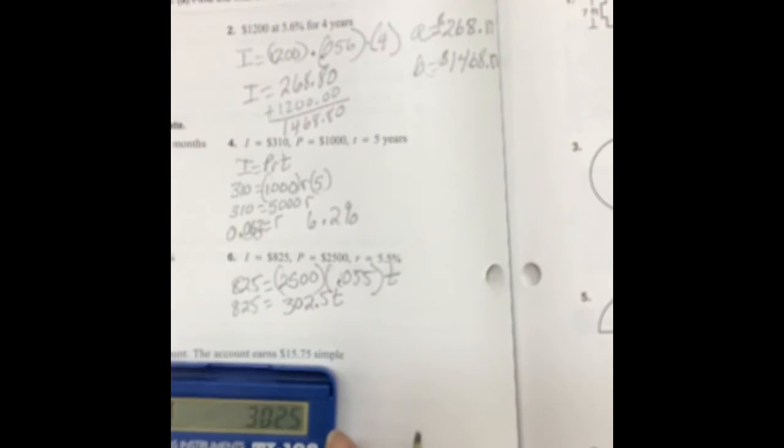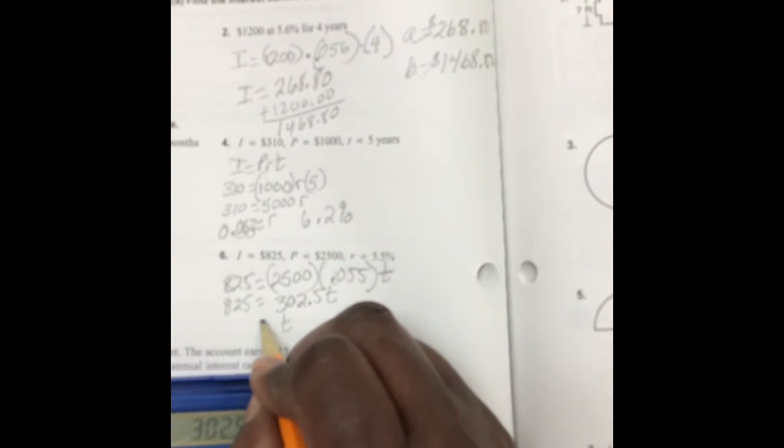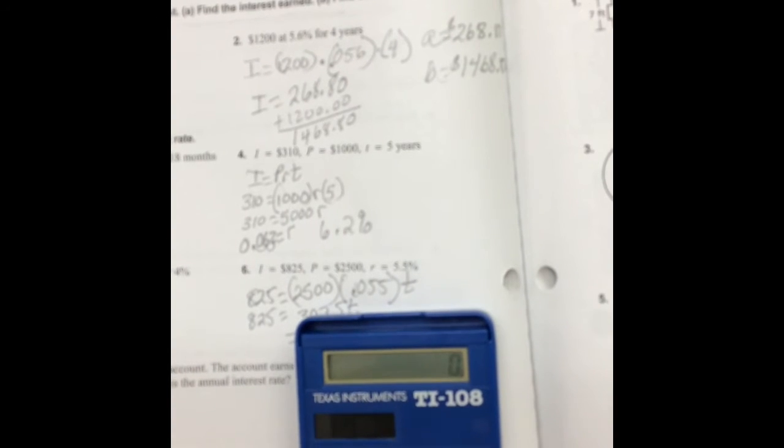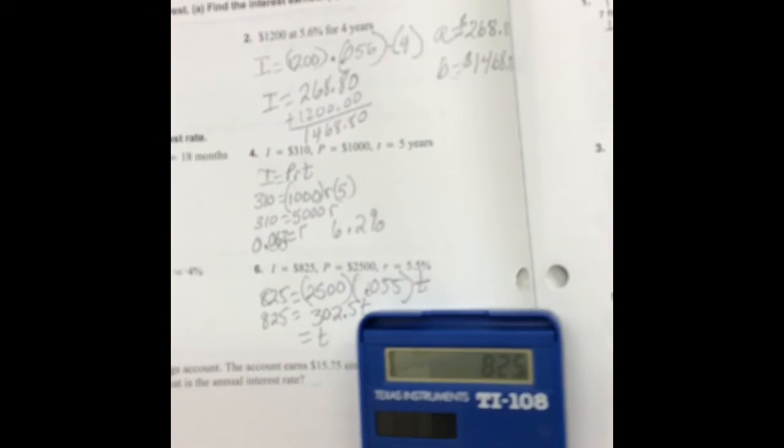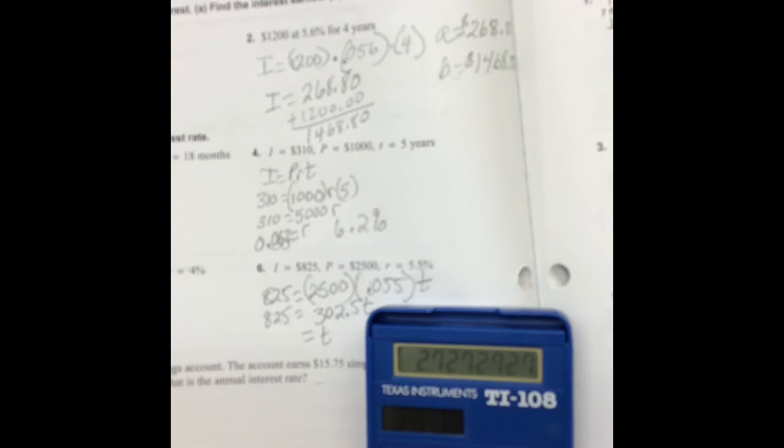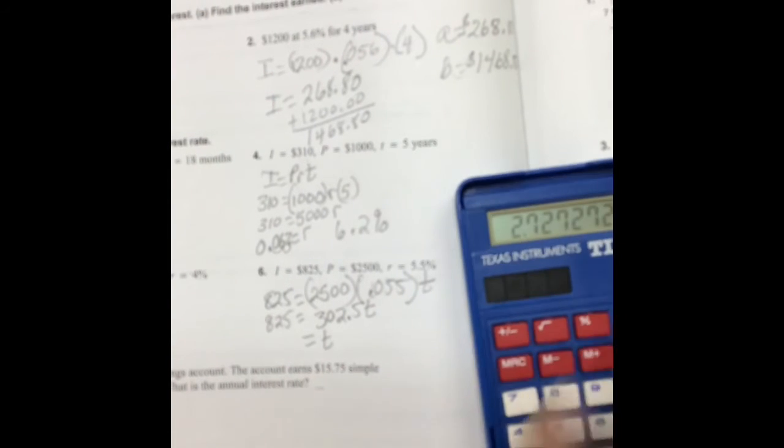Now we're going to divide both sides. So we have 825 divided by 302.5, and we have 2.73.